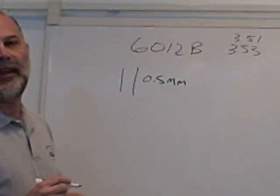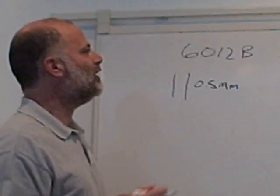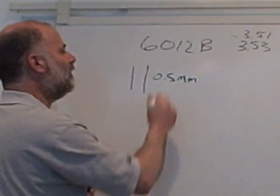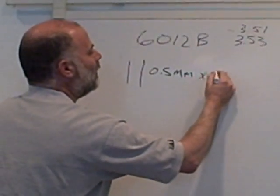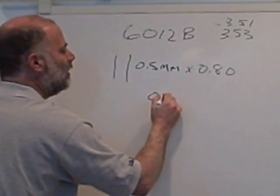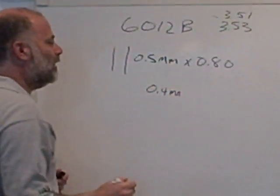Now, if you say nothing on the master drawing, IPC 3.5.1 says it can be 80% of this. So you take your 80% of this, and so now your minimum is 0.4 millimeters or 16 mil.